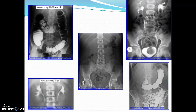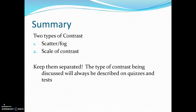Here are some examples of images using contrast media. In summary, the two types of contrast include scatter fog and scale of contrast. Be sure to keep them separated. The type of contrast being discussed will always be described on quizzes and tests.